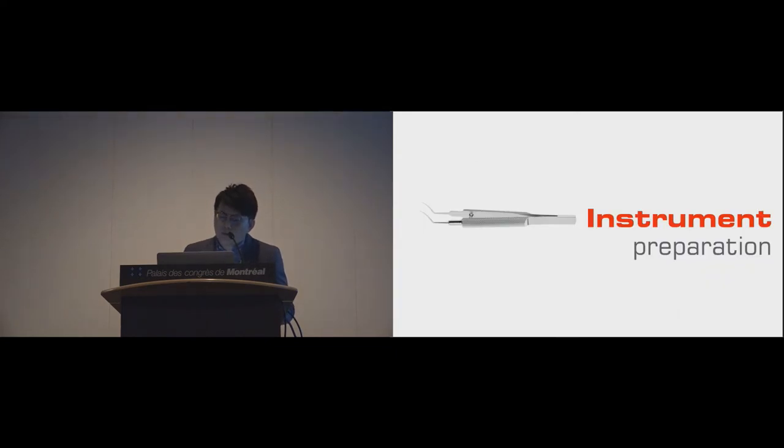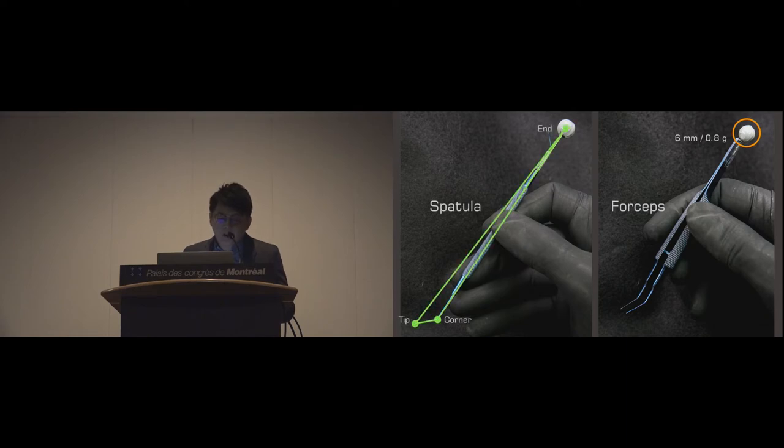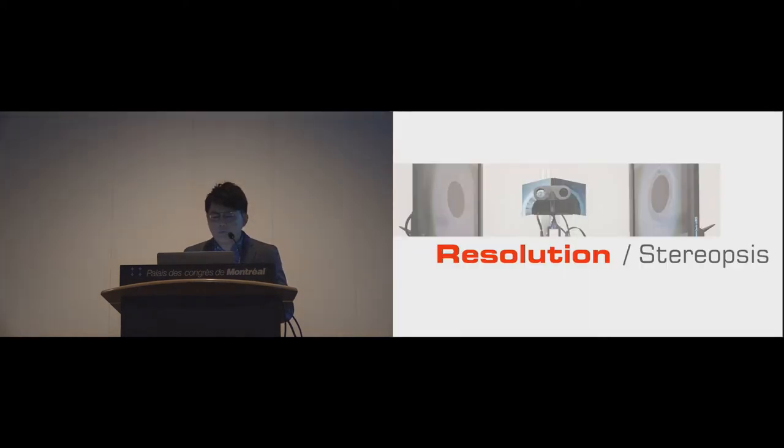We only need two simple steps to prepare the instrument. First, we have to attach one reflective marker to the distal ends of the instrument. Users' performance won't be affected by this marker because of its tiny size and light weight. The next step is to measure the distance between three landmarks of the instrument.